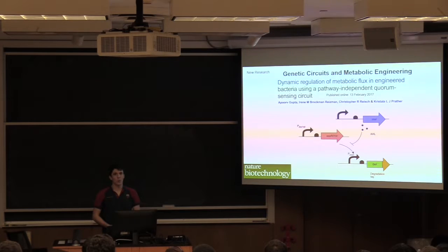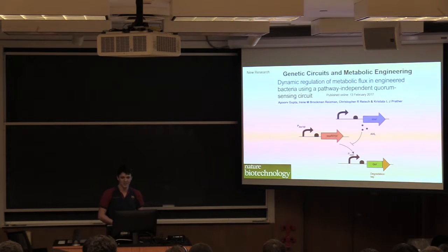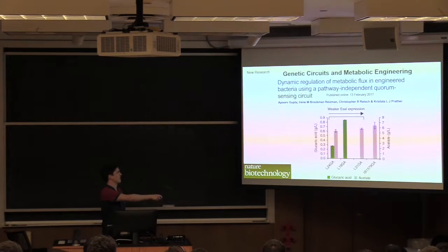They basically engineered quorum sensing in E. coli such that once the bacteria reach a certain density, they would shut off essential carbon metabolism genes that were siphoning off the metabolites that were being used for biosynthetic engineering purposes. And they showed that their best engineered strain produced a lot of, so the green is what they want, it's myo-inositol. And their best engineered strain produced a lot of myo-inositol and none of the waste products that they didn't want like acetate. Whereas these are strains that don't have that quorum sensing dynamic control of the carbon flux. And they get a lot of waste and not very much of the desired molecule.